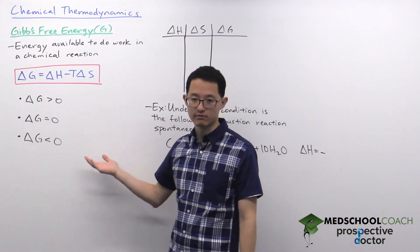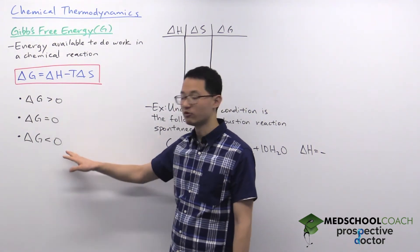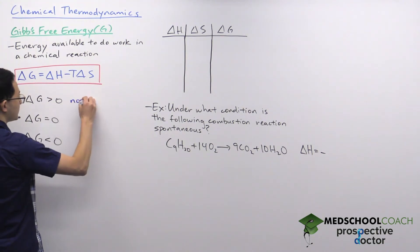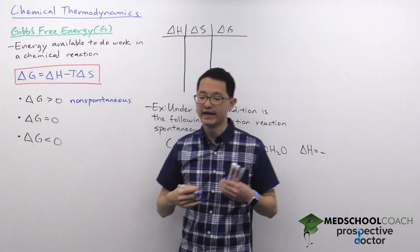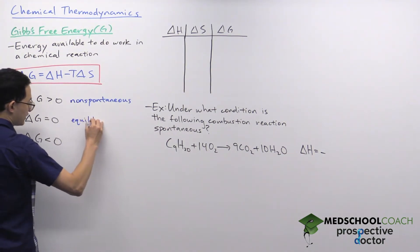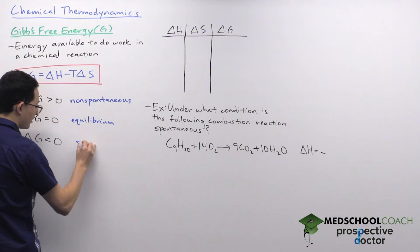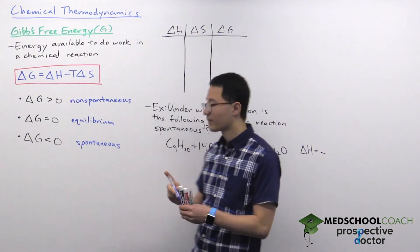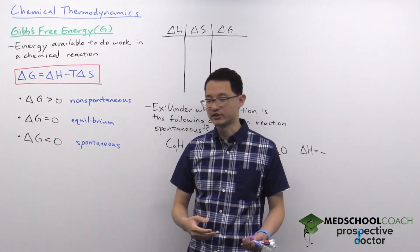Free energy change is important because it tells us about the spontaneity of the reaction. The value can be positive, zero, or negative. If Delta G is positive, the reaction is non-spontaneous and will not proceed in the forward direction. If Delta G is zero, the reaction is at equilibrium. If Delta G is negative, the reaction is spontaneous and will spontaneously proceed in the forward direction.